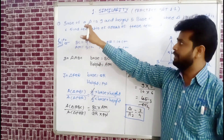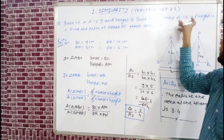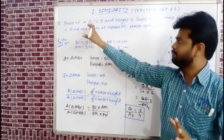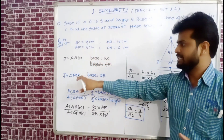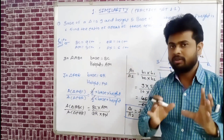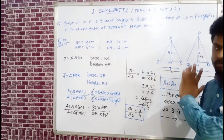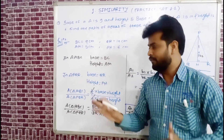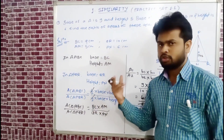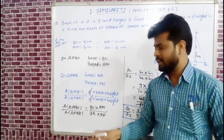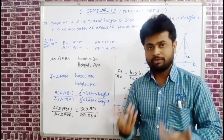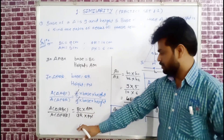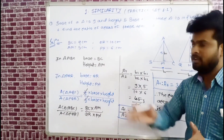For the practice set: first triangle base 9 and height 5, second triangle base 8 and height 6. You can denote the triangles as ABC and PQR, then simply use the area formula, cancel common factors, and calculate the ratio of the areas.